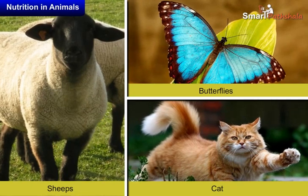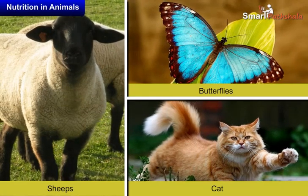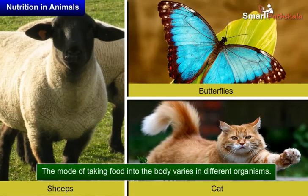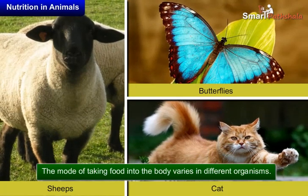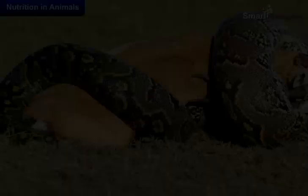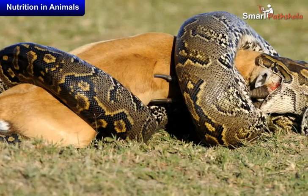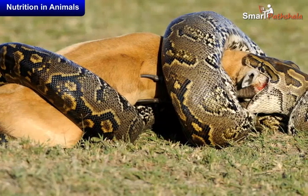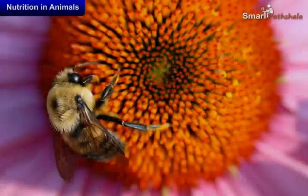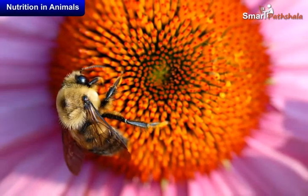Now let us know the mode of taking food in different organisms. The mode of taking food into the body varies in different organisms. For example, snakes like python swallow the animals they prey upon. Honeybees suck the nectar from flowers.